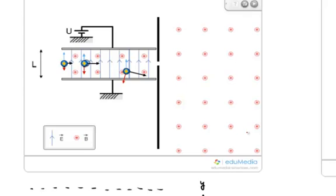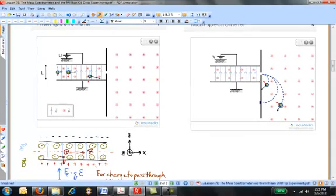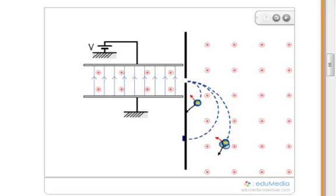Only particles that are moving at exactly the right speed will pass through undeflected. And that's what we want. We want all the particles in our beam, regardless of their charge and regardless of their mass, to pass through with the same speed. So now we have these particles emerging from the velocity selector at speed v, which is equal to E divided by B, and we want to figure out how their mass and their radius of curvature are related to each other.